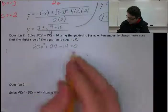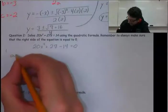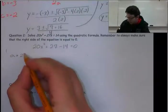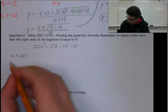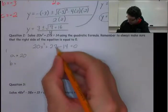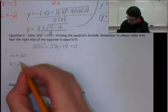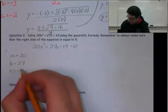We are going to use the quadratic formula where a = 20, b = 27 (I forgot my x here), and c = -14.